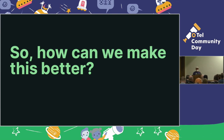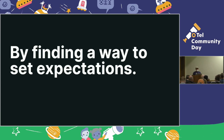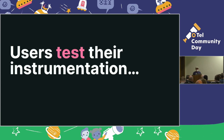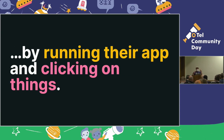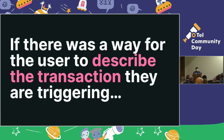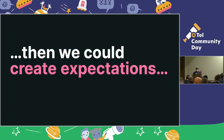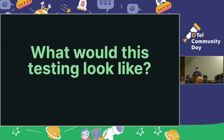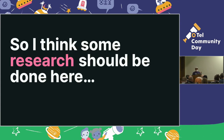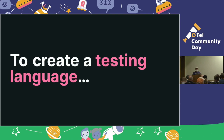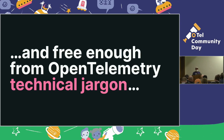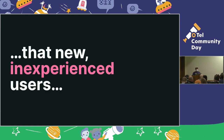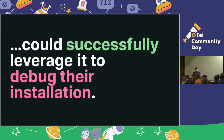So how can we make this situation better for people? My suggestion is we have to find some way to set expectations, because when users test their instrumentation by running their app and clicking on things, OpenTelemetry doesn't know what they're trying to do — it doesn't know what kind of data it should be expecting. So if there is a way for that user to describe the transaction they're triggering, we could create some expectations which would allow us to test the data actually coming into a collector.